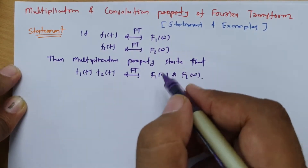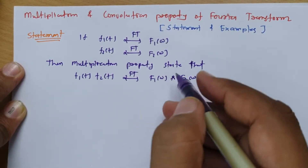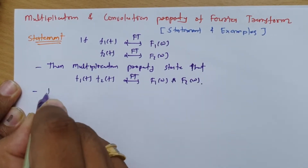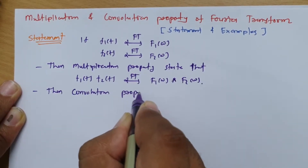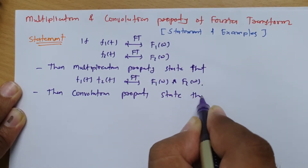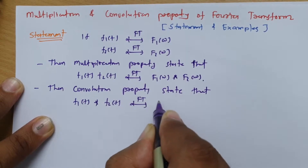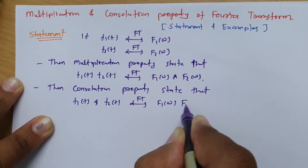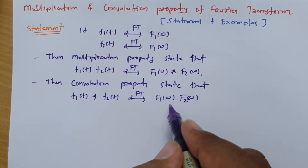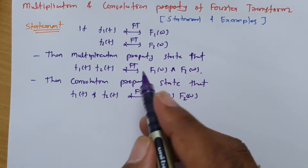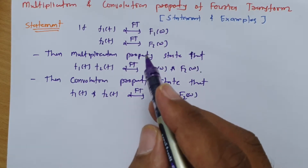So multiplication of two time domain signals results in convolution of two frequency domain signals. And the convolution property states that convolution of two time domain signals, when Fourier transformed, results in multiplication in the frequency domain. Likewise, frequency domain convolution results in multiplication in the time domain.